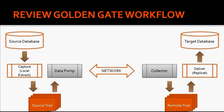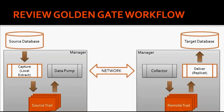In the entire workflow, the one process we didn't speak about is the manager process. The manager process is used to manage all Golden Gate processes. A single manager process runs on each server where Golden Gate is installed. When Golden Gate is started, the manager process is the first to come up, and in turn it starts the other Golden Gate processes like capture, data pump, collector, extract, delivery, and replicat process. The manager process also manages reports and produces log files.